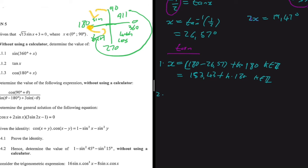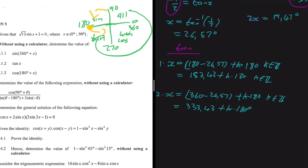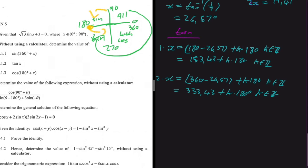The second general solution from the fourth quadrant: x = 360° - 26.57° + k·180°, k ∈ ℤ. Simplifying, x = 333.43° + k·180°, where k is an integer. The period of tangent is 180°. That completes the tan portion.